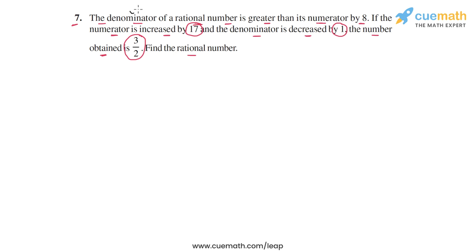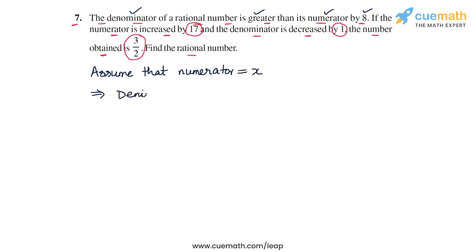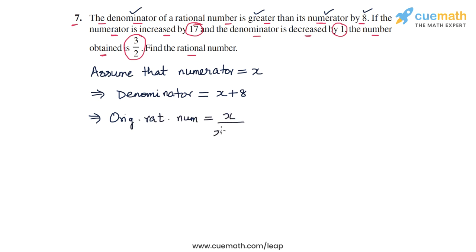We know that the denominator is greater than the numerator by 8, so let's make use of this fact. Let's assume that the numerator of the original rational number is x. This means that the denominator will be 8 more than x, or x plus 8. Hence the original rational number will be x divided by x plus 8.